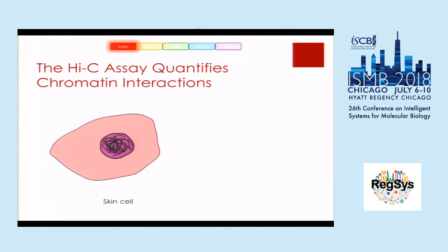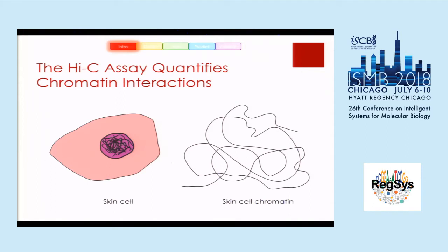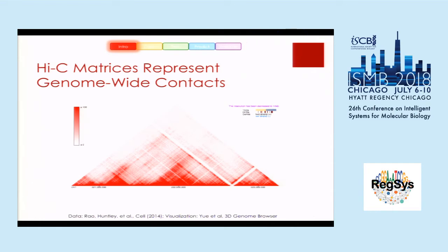Very quick recap of Hi-C, since I'm sure most of you are familiar with it already. Hi-C measures the 3D conformation of the genome. So if you have a skin cell and you extract the DNA, it'll have this tangled structure. Hi-C measures these interactions where you have two pieces of DNA that are close to each other in three dimensions. This is followed by paired-end sequencing. After you map it back to the genome, you can generate a contact matrix like this.